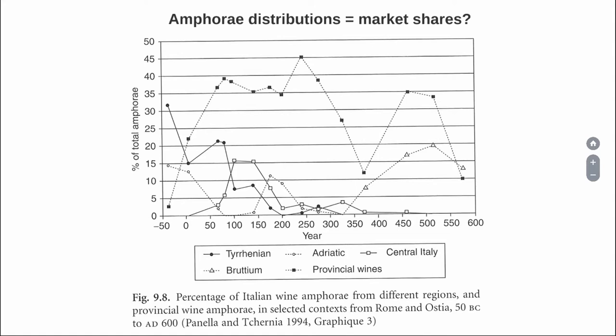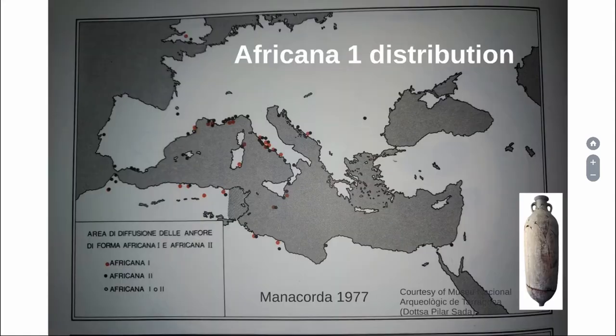These are selected contexts from Rome and Ostia for Italian wine amphorae, detailing proportions and origins of these amphorae. It is very tempting to interpret that as: there was so much Tyrrhenian wine consumed, so much Adriatic wine consumed, so much of this wine consumed. We don't always make these assumptions, but they are kind of there, and we are not addressing this problem. I do think it is a problem, and I want to use the example of African 1 distribution.